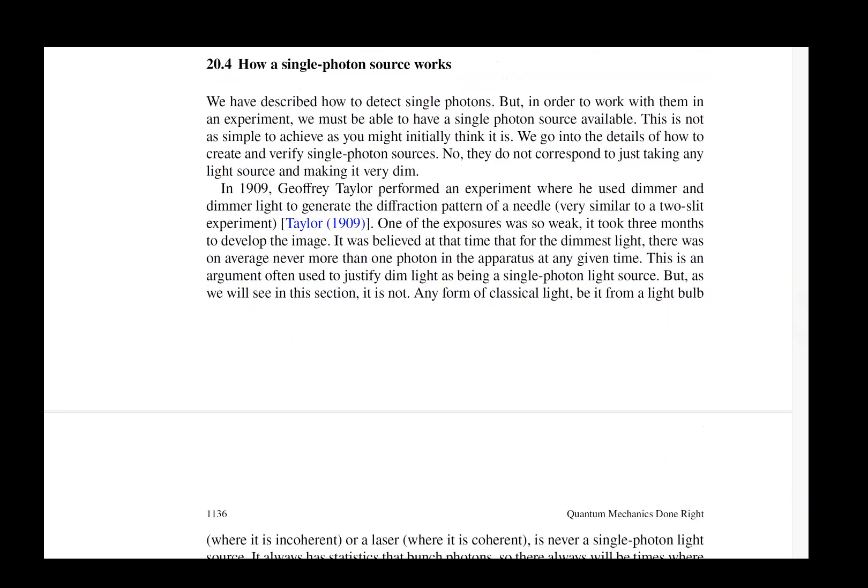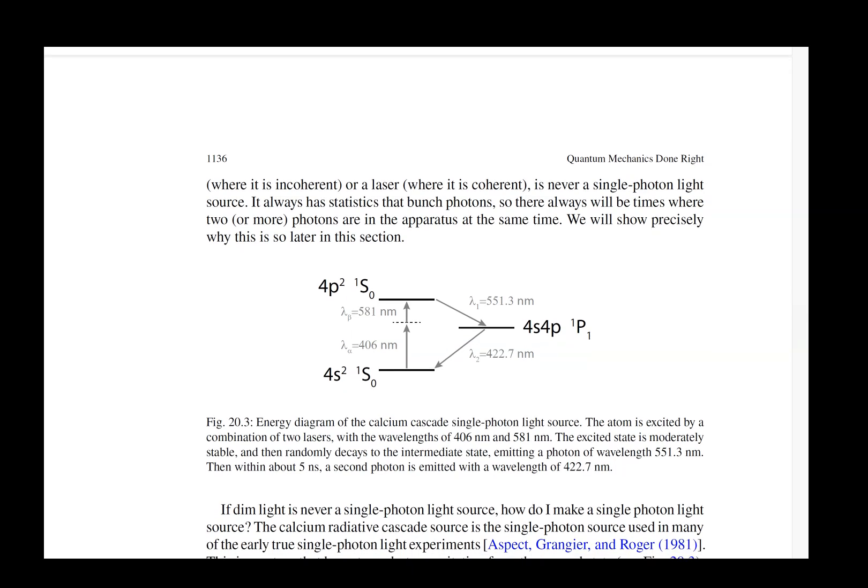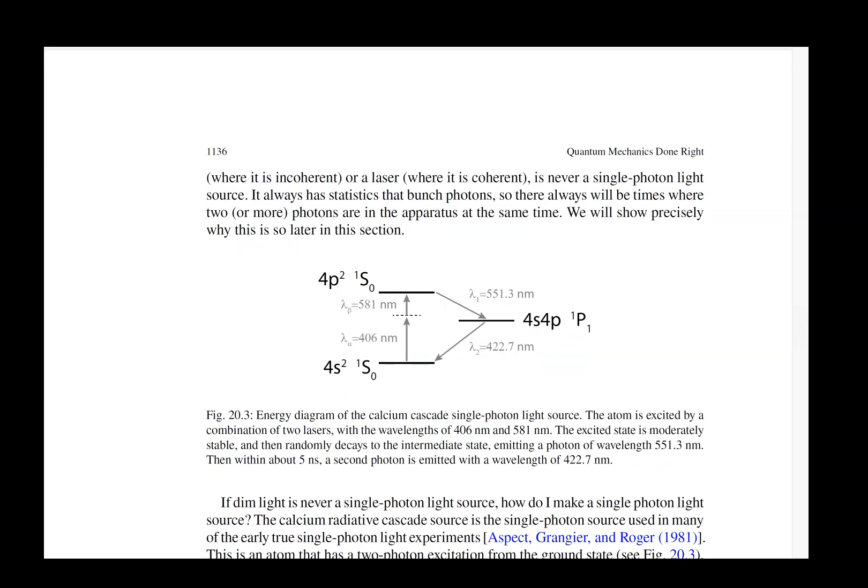Then we talk about how a single photon source works. This is the calcium cascade single photon light source. It's a very interesting device. It requires a two-photon transition to go from the 4s to the 4p state.